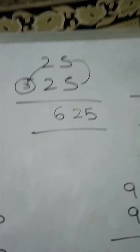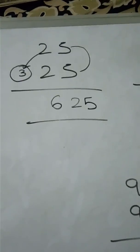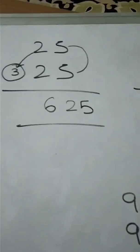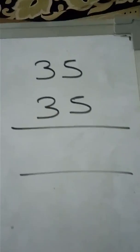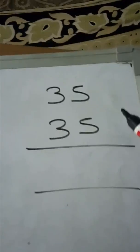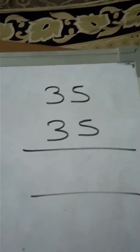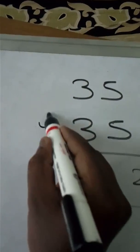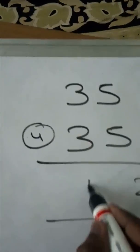Friends, I think you understand it. Then after that, 35 into 35: 5 into 5 is 25, place it here. Replace the 3 with 4, 3 into 4 is 12. Then 1225 is the answer.